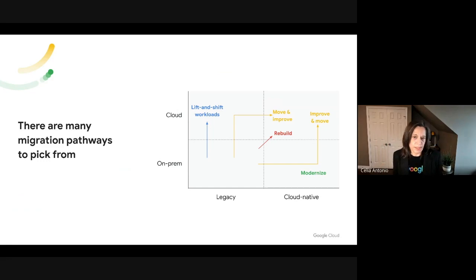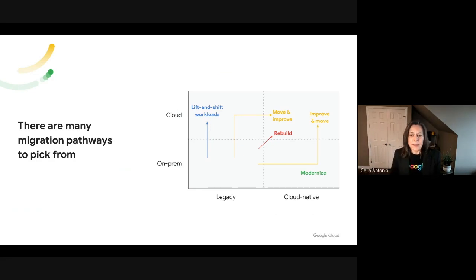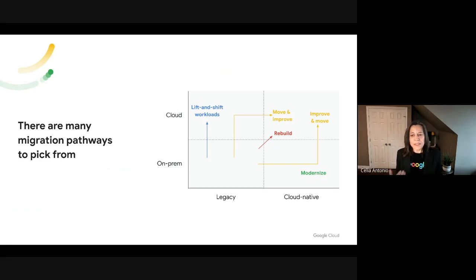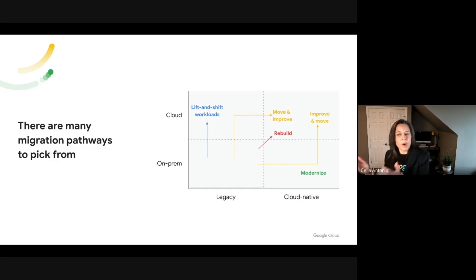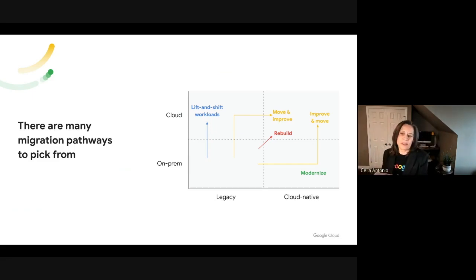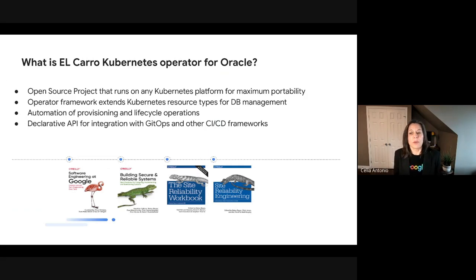We haven't done a transformation per se. If you look at the middle of this slide, you'll see the shortest path is the rebuild path, where you take an on-premise workload and completely rewrite it to take advantage of cloud-native services. That does look like the shortest path, but it is also the most complex, most time-consuming, and possibly most risky. This is why a lot of customers are instead looking at a multi-phased approach, represented by the yellow lines here. In that approach, they either lift and shift to the cloud and then modernize, or they start on-premise, modernize first to make it cloud-native, and then move it to the cloud.